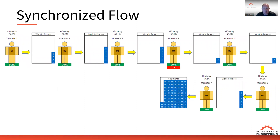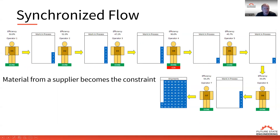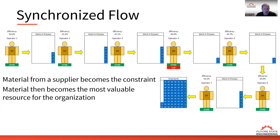In a synchronized system with unbalanced capacity to achieve balanced flow, we have a capacity constrained resource — the resource with the least amount of capacity in the value stream. In this case, we're talking about material being the constraint, so coming into the process our raw material becomes the constraint.